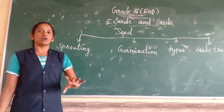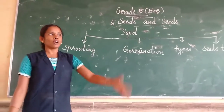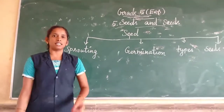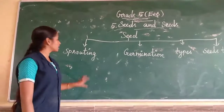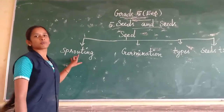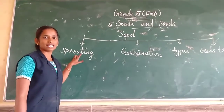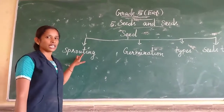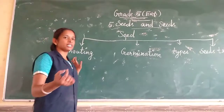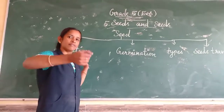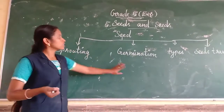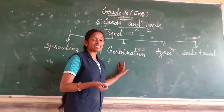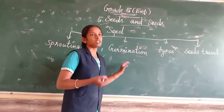First of all, we have to know: if we throw any seed, what is the first thing that happens? Sprouting. Sprouting means a smaller bit growing further. Then next is germination.